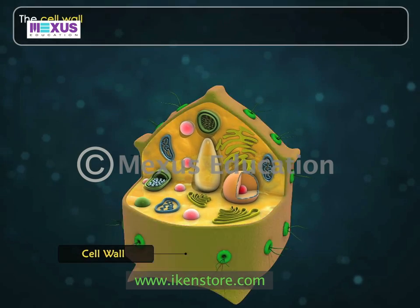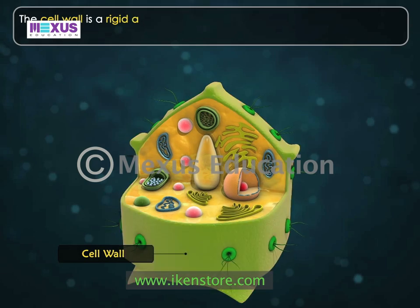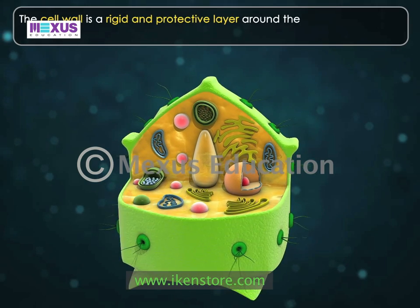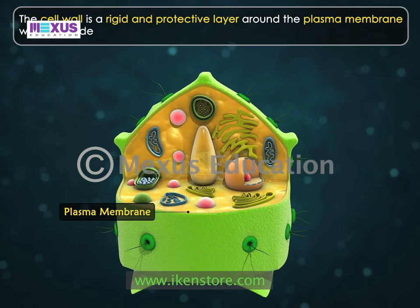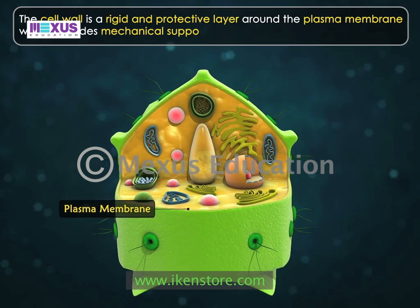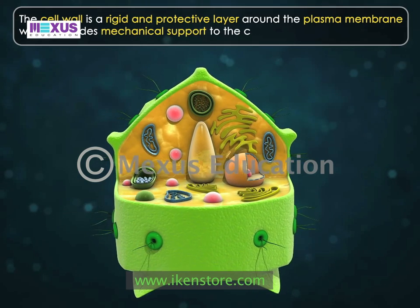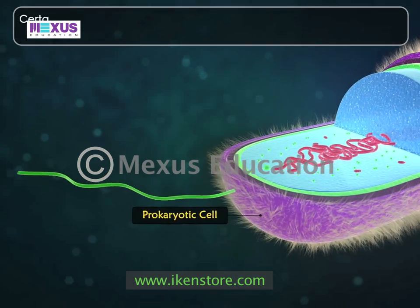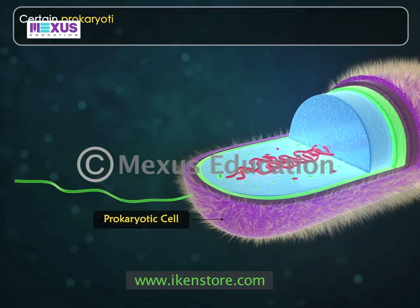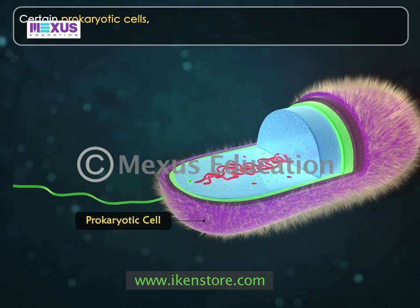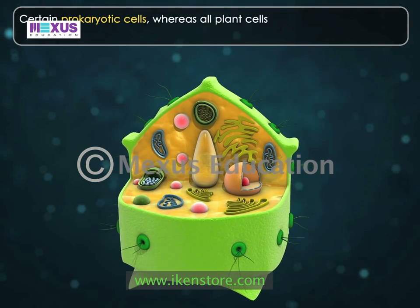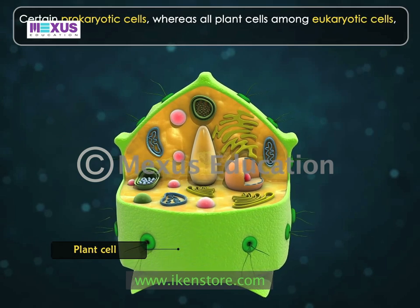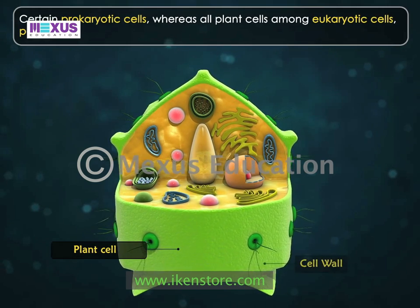The cell wall is a rigid and protective layer around the plasma membrane which provides mechanical support to the cell. Certain prokaryotic cells, whereas all plant cells among eukaryotic cells, possess a cell wall.